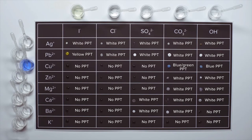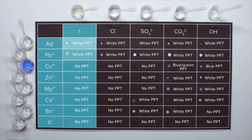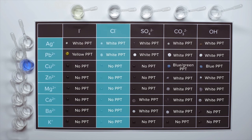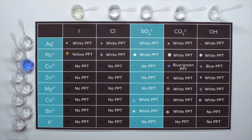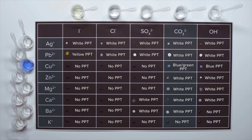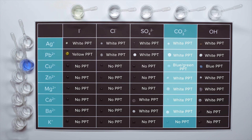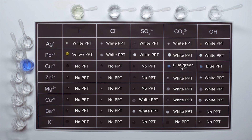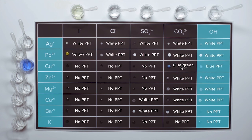The completed results table looks something like this. The only iodide precipitates formed were silver and lead. The chloride precipitates were also silver and lead. The sulphate precipitates included calcium and barium. All of the cations formed carbonate precipitates except for potassium. And all of the cations formed hydroxide precipitates except for barium and potassium. These results comply with the precipitation rules that we looked at earlier in the lesson.